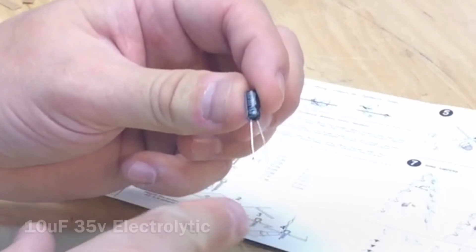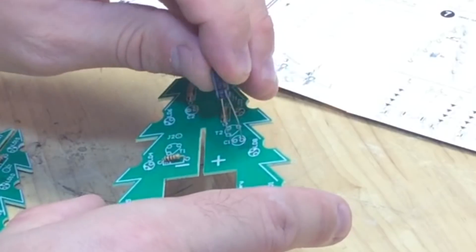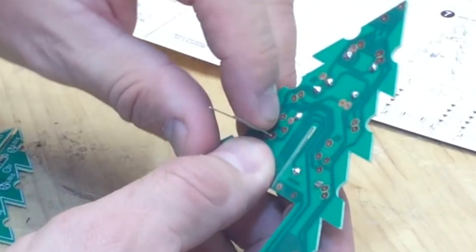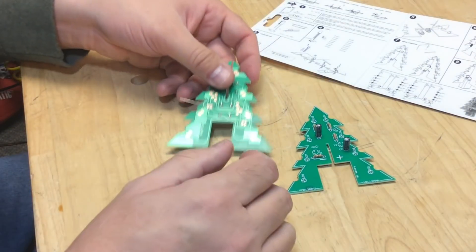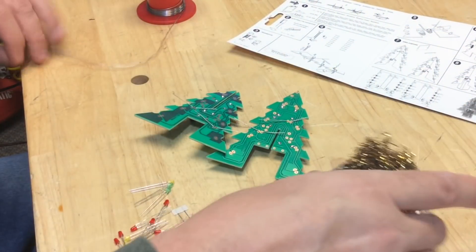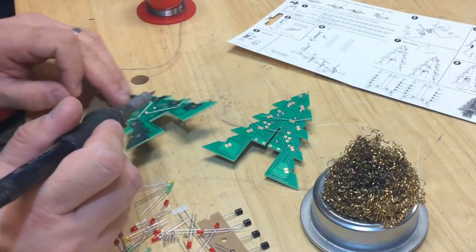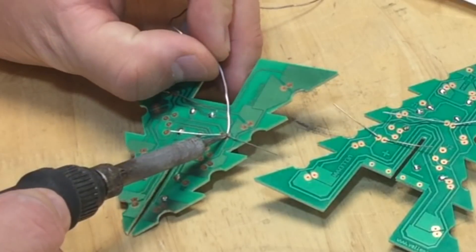Now these have one longer lead than the other, so they go in a certain way. The long lead goes into the spot where it's marked with a positive symbol, and you bend those over. So there's four of these guys to install. Soldered them in place, and once they were soldered in place, I had to go through and clip their leads.